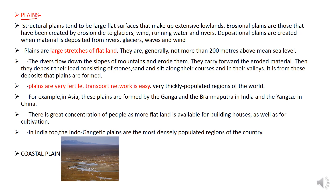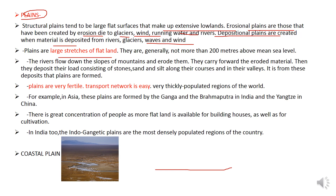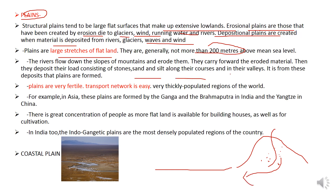Structural plains tend to be large flat surfaces that make up extensive lowlands. Erosional plains are those created by erosion due to glaciers and running water. Depositional plains are created when material is deposited by rivers, glaciers, waves, and wind. Plains are large stretches of flatland, generally not more than 200 meters above sea level. Rivers flow down the slopes of mountains, erode them, and deposit their load of sand, stone, and silt along their courses and in their valleys — it is from these deposits that plains are formed.